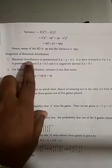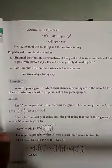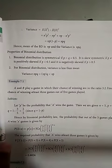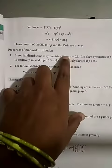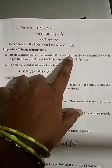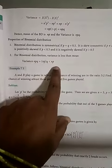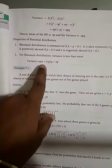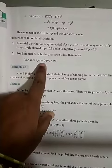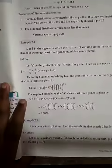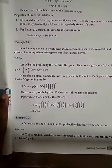The properties are: if the binomial distribution is symmetrical, that is p = q = 0.5, then the variance is always less than the mean — that is, npq is always less than np.